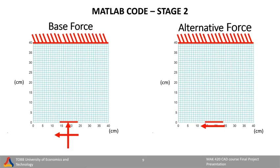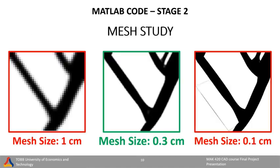At the second stage of our MATLAB code, we did a topology optimization study. During this process we used two different loading types: one is called the base force and the other is called the alternative force loading. Before examining how volume fractions affect the topology optimization, we conducted a mesh study using the base force boundary condition with 30% volume fraction. As you can see, the best option is the medium mesh size. Using a mesh size of one centimeter causes some important geometric shapes to disappear, and using a finer mesh of one millimeter does not give any significant advantage. Therefore, using a medium mesh is ideal because it is more economical.